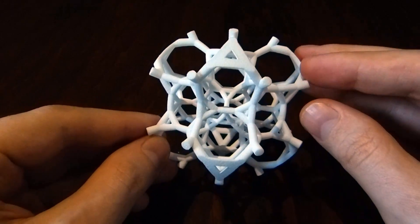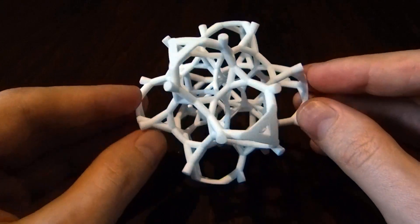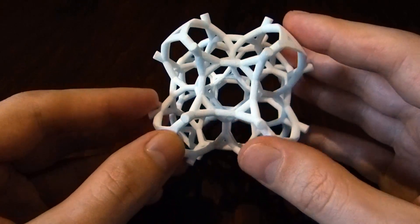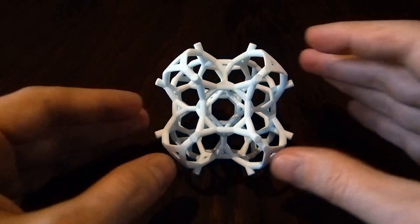It has threefold symmetry, two reflection symmetries and a fourfold rotational symmetry here. So this is half of a 48-cell.